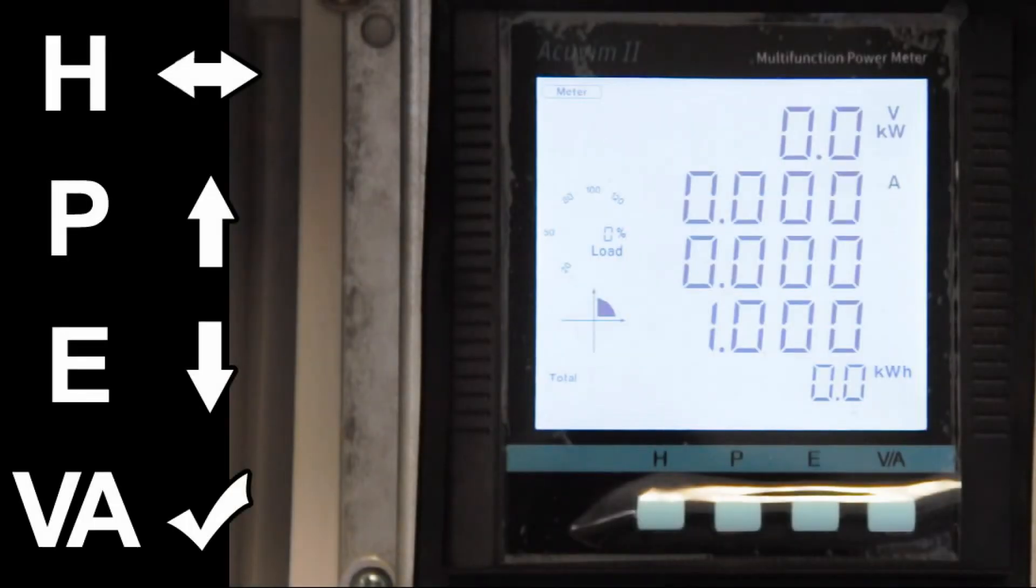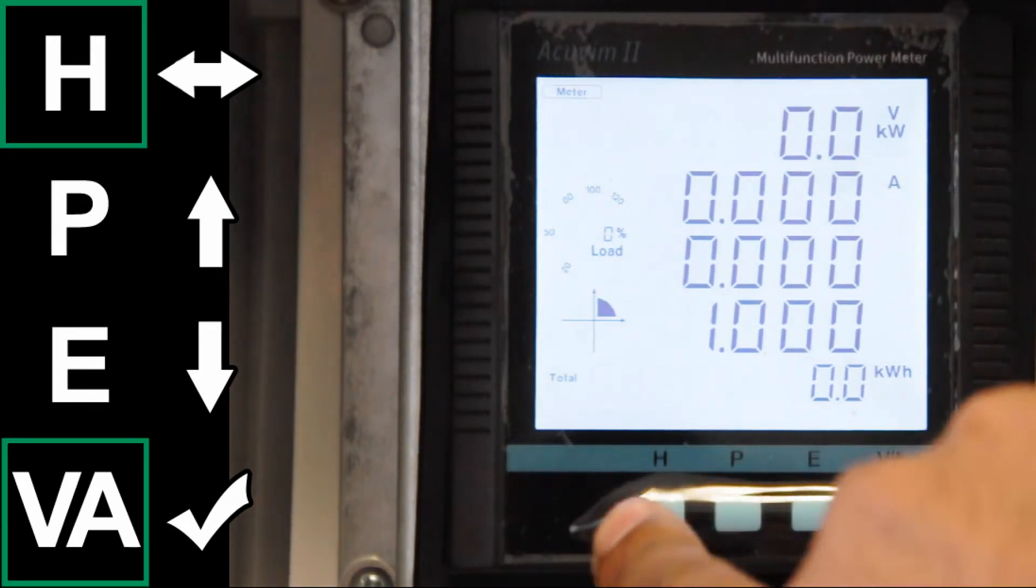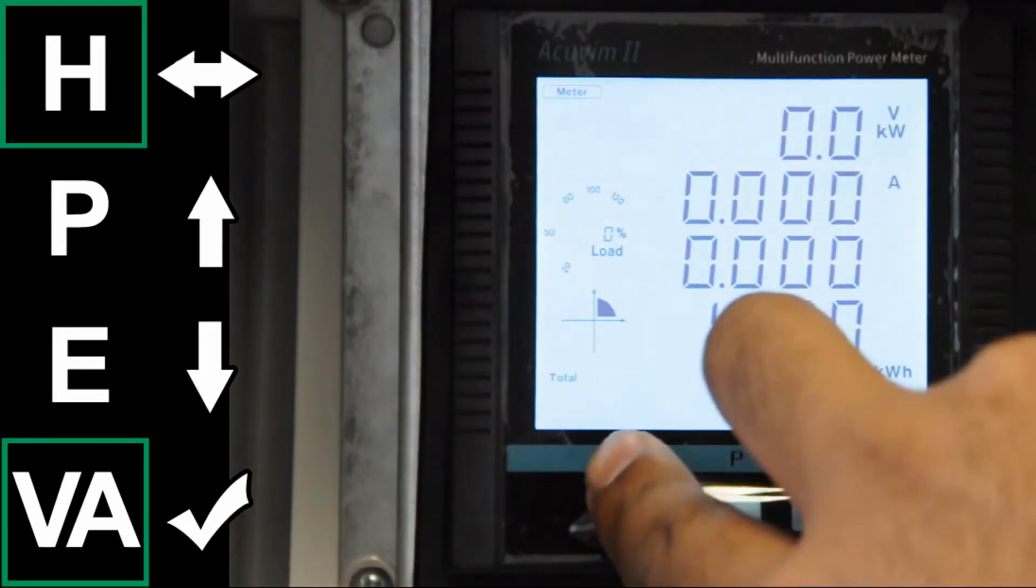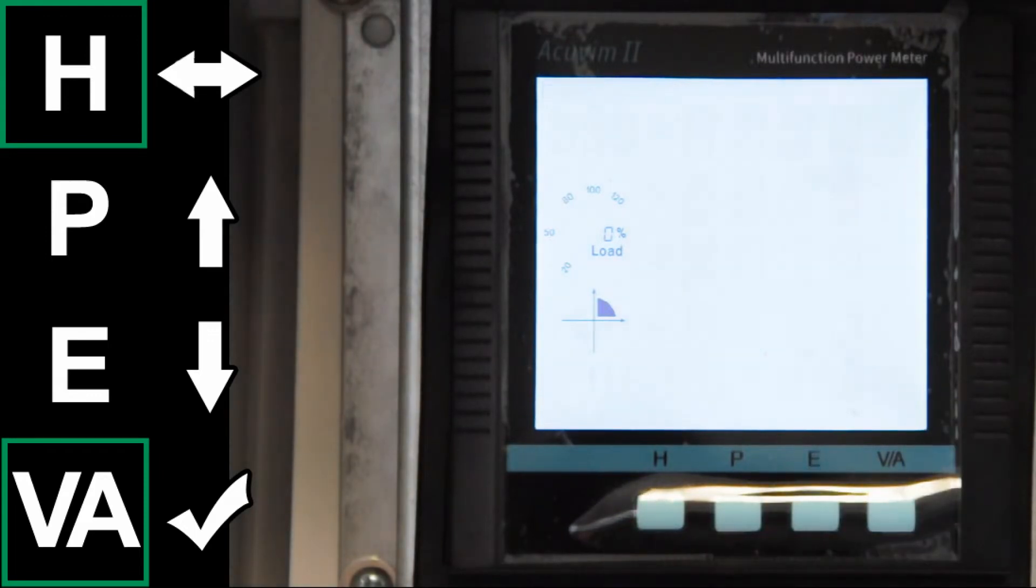To enter the setting mode, press H and VA at the same time. Once you do, the meter light should be flashing.